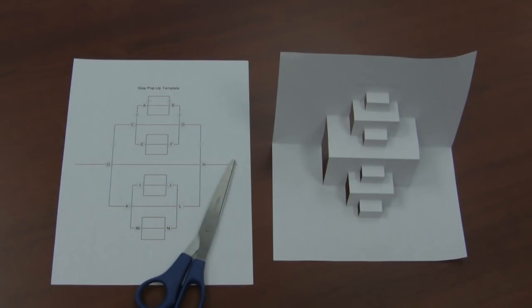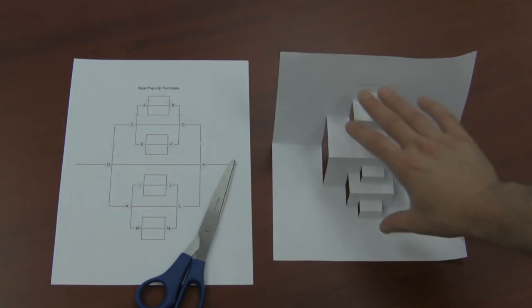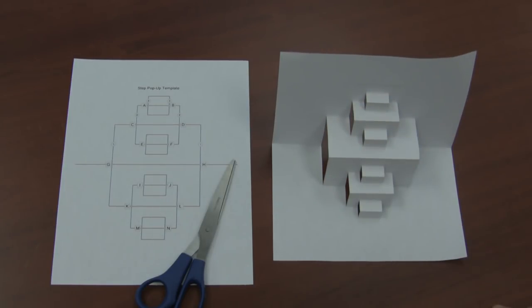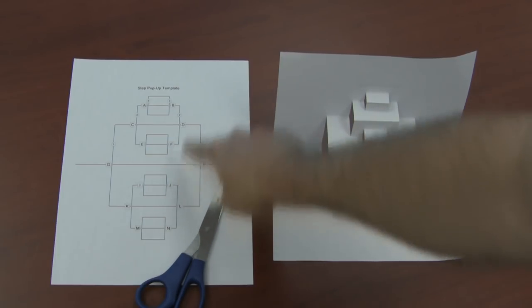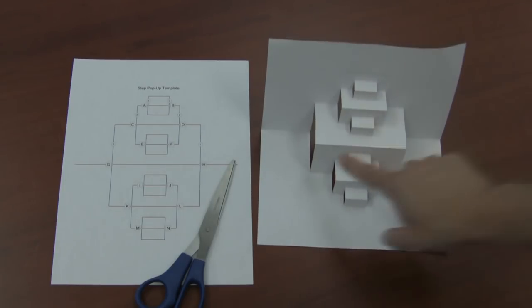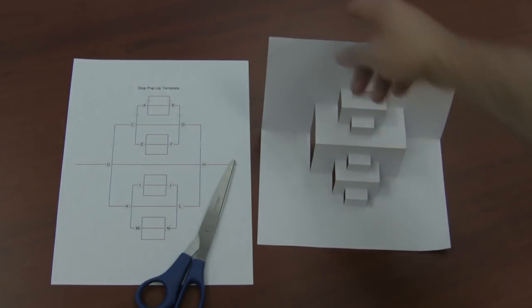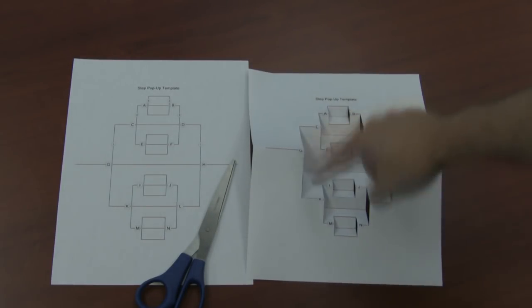Before I go over the first step in making the step pop-up template turn into the step pop-up, it's good to know that we've got the template with colored lines and letters on the left hand side. When you look at the actual finished product, you'll notice none of those lines are present. But if you flip it over and flatten it out, you'll see that the lines are there.